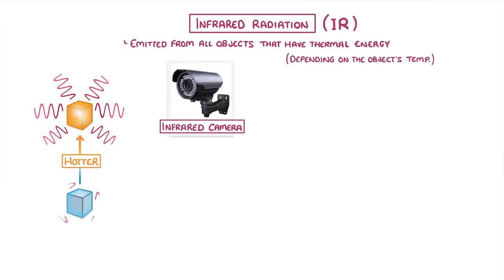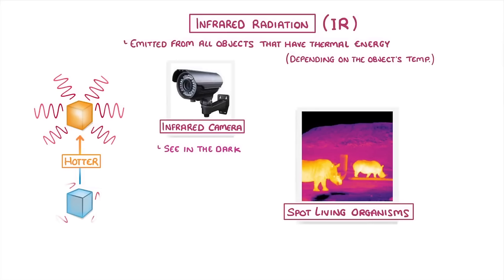One use of this is in infrared cameras that help us to see in the dark, and in particular, to help us spot living organisms. By using a special camera that can detect infrared radiation, we can see which areas are hot and which areas are cold by measuring how much infrared radiation they emit. Animals, which are fairly warm, will appear quite bright because they emit lots of infrared radiation, whereas their surroundings, which are much cooler, will appear darker because they don't emit as much radiation.